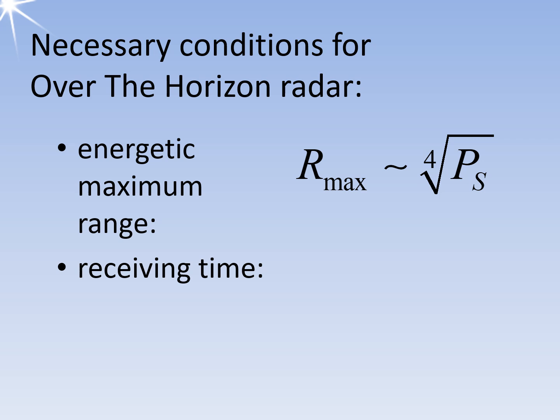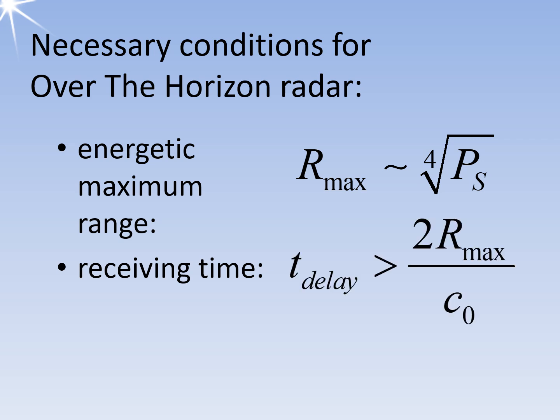Second, the receiving time: the radar set must have a sufficiently long receiving time for an unambiguous range measurement, to measure the time between the echo signal and the transmitted pulse. The pulse repetition frequencies must therefore be very low.